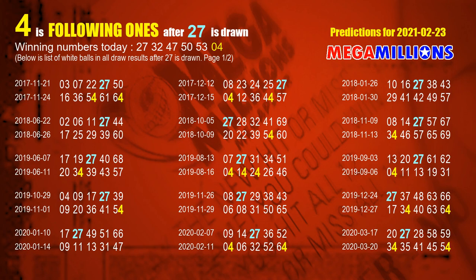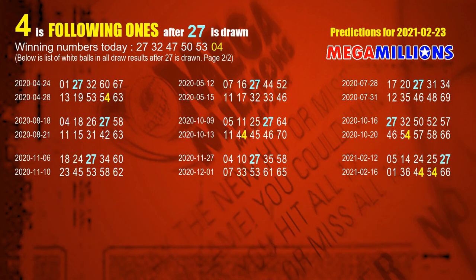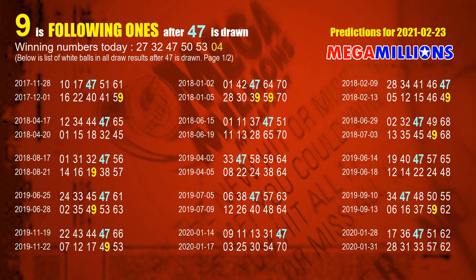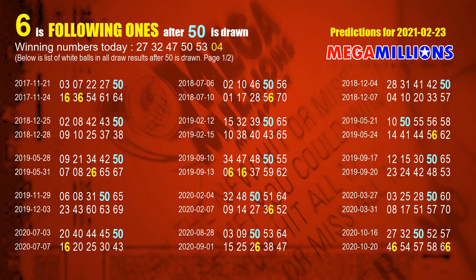The most frequently following units digit is 4 when 27 is the winning number in the last draw. We already highlight the units digit 4 in yellow for you. The second white ball is 32 — the most frequently following units digit is 9. The third white ball is 47 — the most frequently following units digit is 9. The fourth white ball is 50 — the most frequently following units digit is 6.